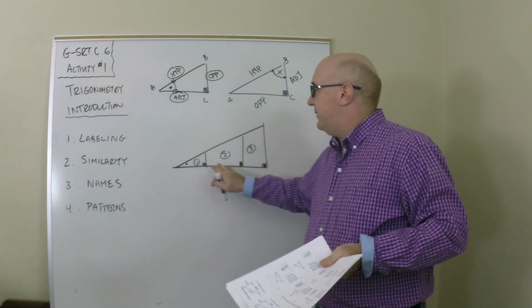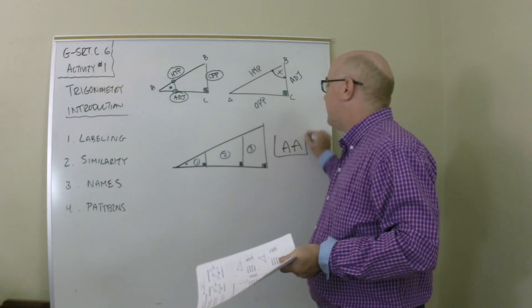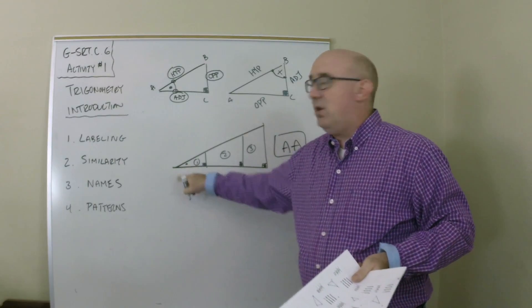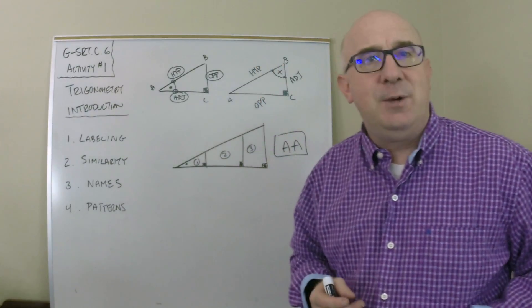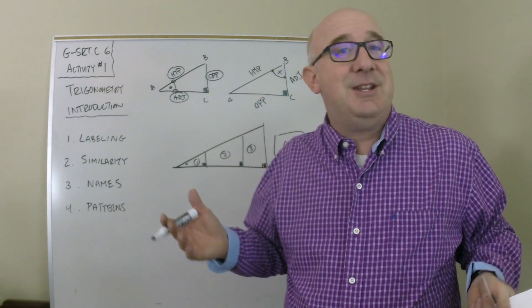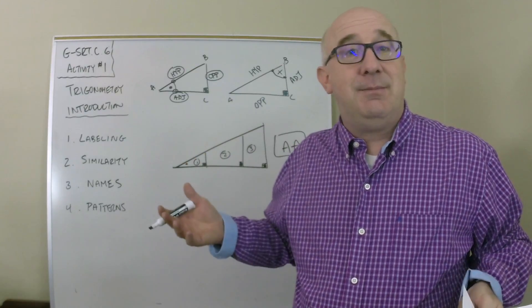All three of these triangles are similar by AA. Because they all have right angles and they all share that little angle down there. So what you're going to find, what you're going to expect to find, is that the ratios of sides in all three triangles will match up.